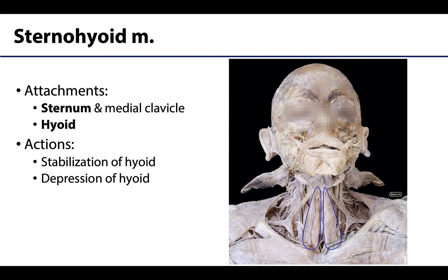We'll start with one of the larger ones, the sternohyoid, outlined here in blue. The attachment points match up to the muscle's name — a common theme for infrahyoid muscles. This muscle extends inferiorly from the sternum and medial clavicle all the way up to the hyoid. It completely blocks the view of the deep strap muscles, so it has to be reflected to see those. This muscle plays an important role in stabilization of the hyoid and, when it concentrically contracts, it depresses the hyoid.